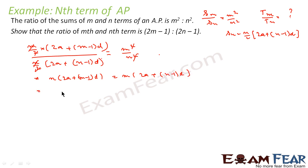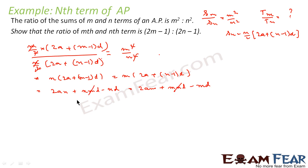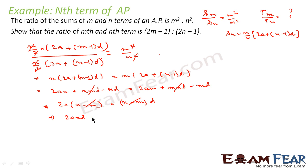Let's solve this. We get 2an plus mn·d minus n·d equals 2am plus mn·d minus m·d. The mn·d terms cancel. Taking 2a terms together, we get 2a(n − m) equals d(n − m), and canceling (n − m) from both sides gives us 2a equals d. That is equation 1.